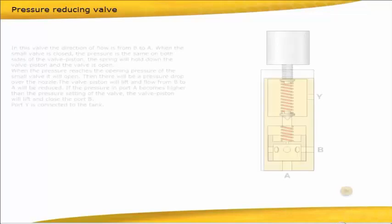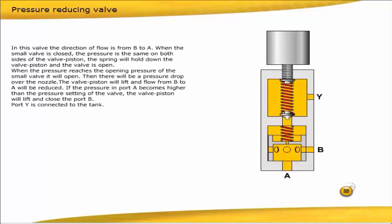In this valve, the direction of flow is from B to A. When the small valve is closed, the pressure is the same on both sides of the valve piston. The spring will hold down the valve piston and the valve is open.